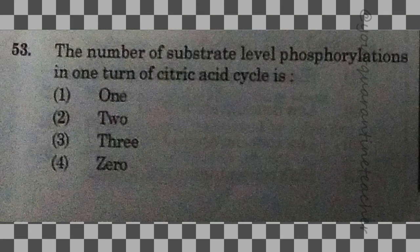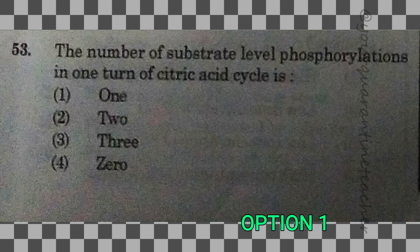53rd question: the number of substrate-level phosphorylations in one turn of the citric acid cycle is — option 1 — one. That is the right answer.